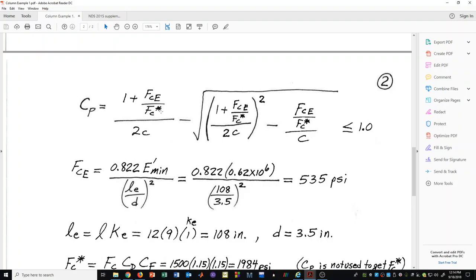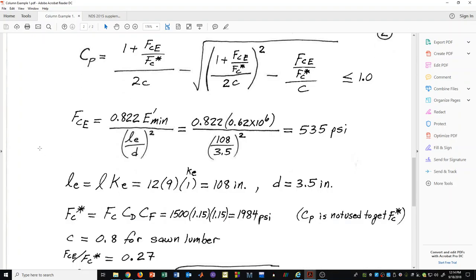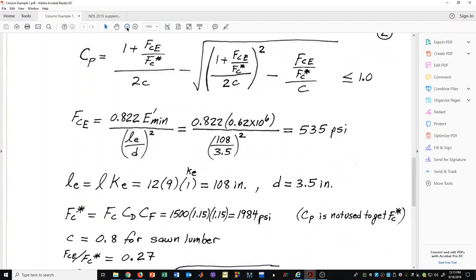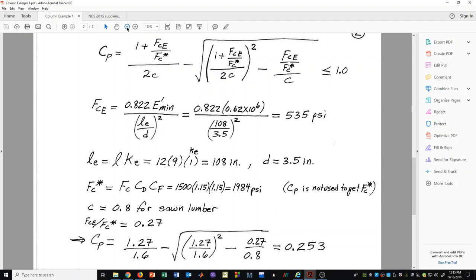In this formula there are actually three things that we need to have. We need to have F sub CE, we need to have F sub C star, and we also have to have this lower case c value.